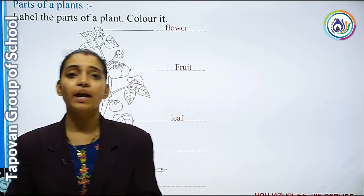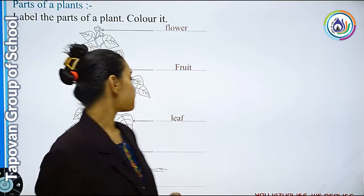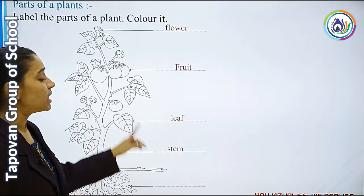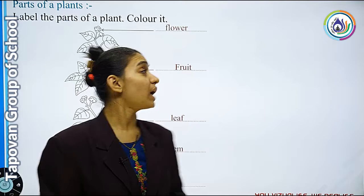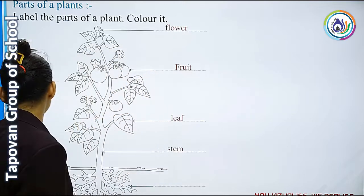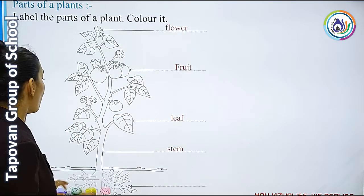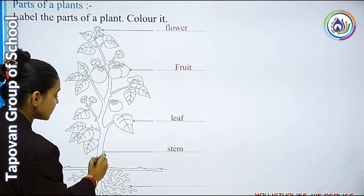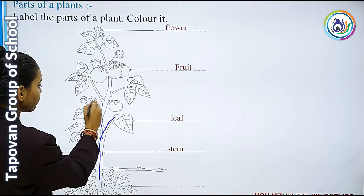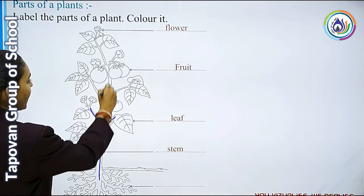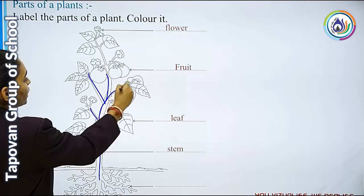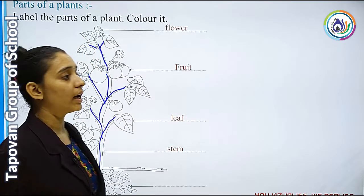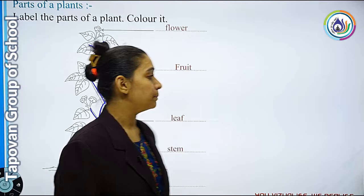Next part क्या है हमारा? Stem. Stem का मतलब क्या होता है? यहाँ पे आपको बहुत सारी stem दिखाई दे रही है — roots में से जो निकलता है, उसे हम Stem कहेंगे. यह जो सारे parts हैं, उसे हम Stem कहेंगे.